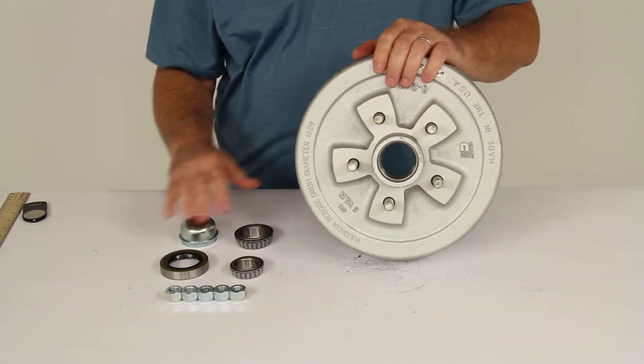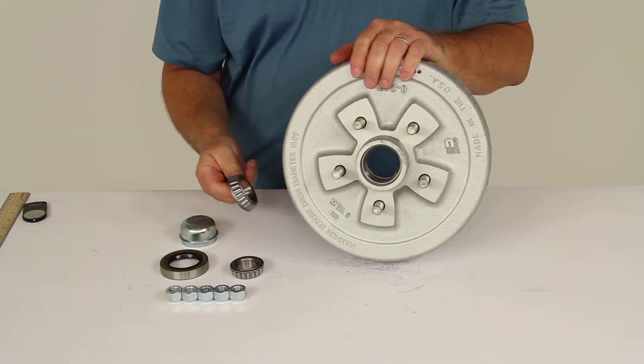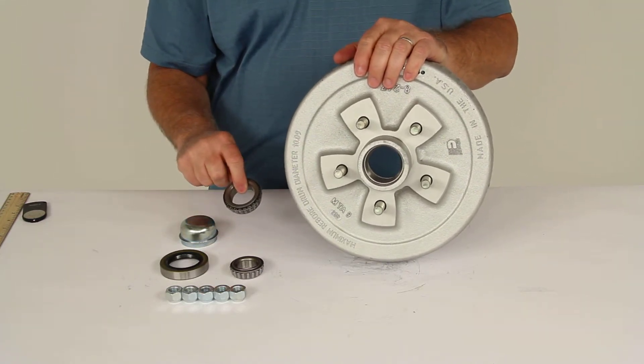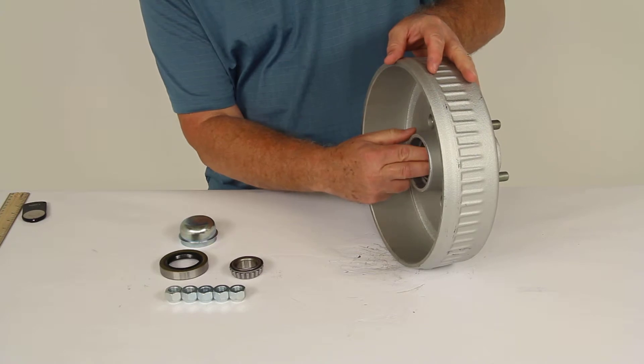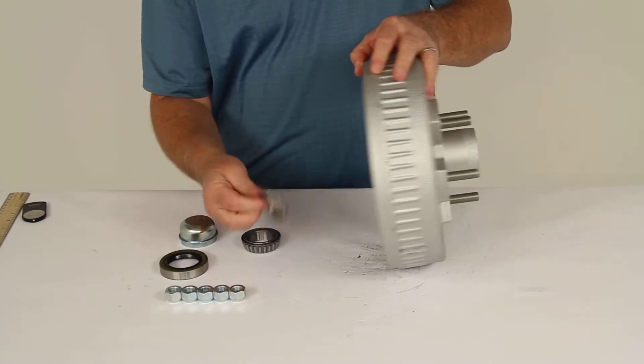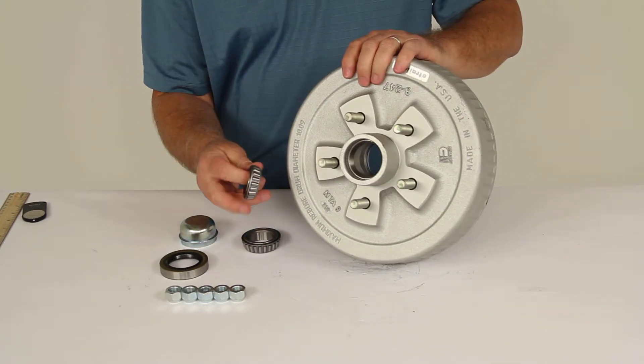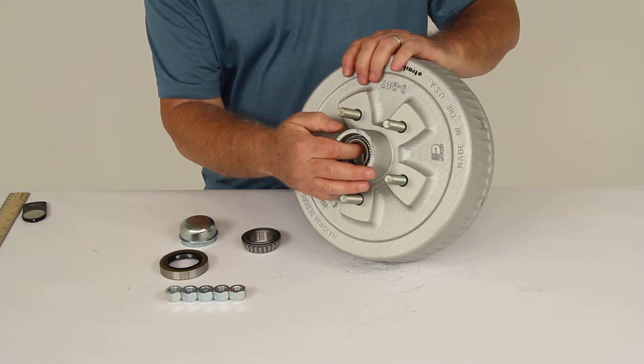Now the bearings that are included, everything is shown here. The inner bearing is part number L68149, and that would go on the inside right there. The outer bearing, which is L44649, goes right in there onto the race.